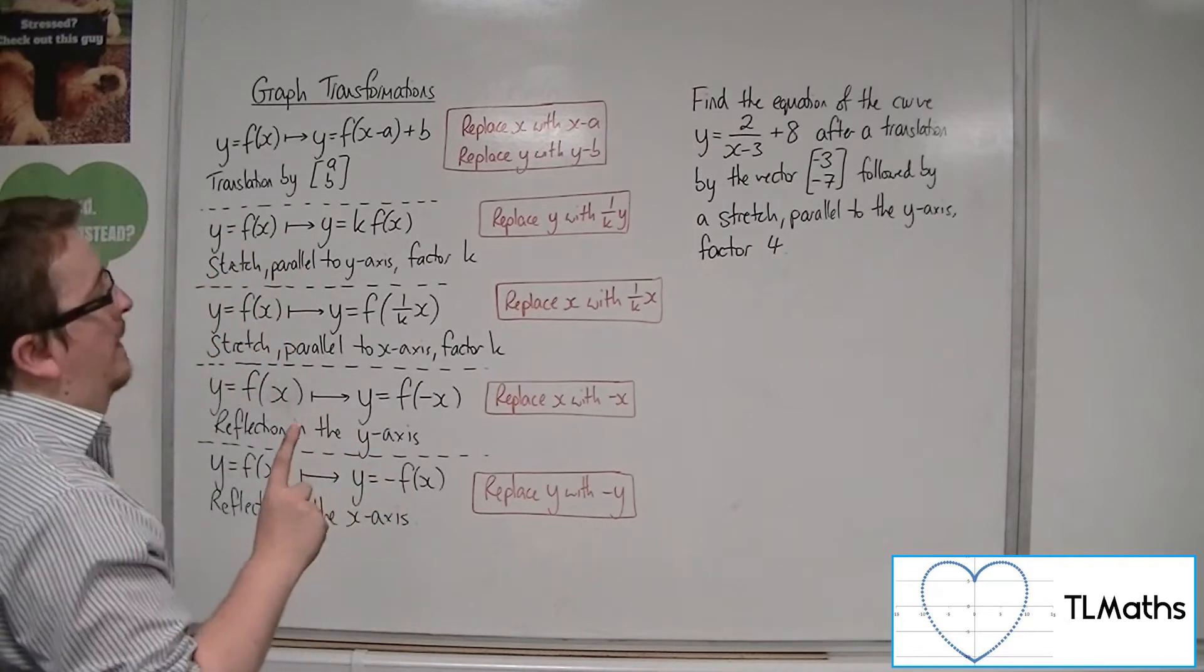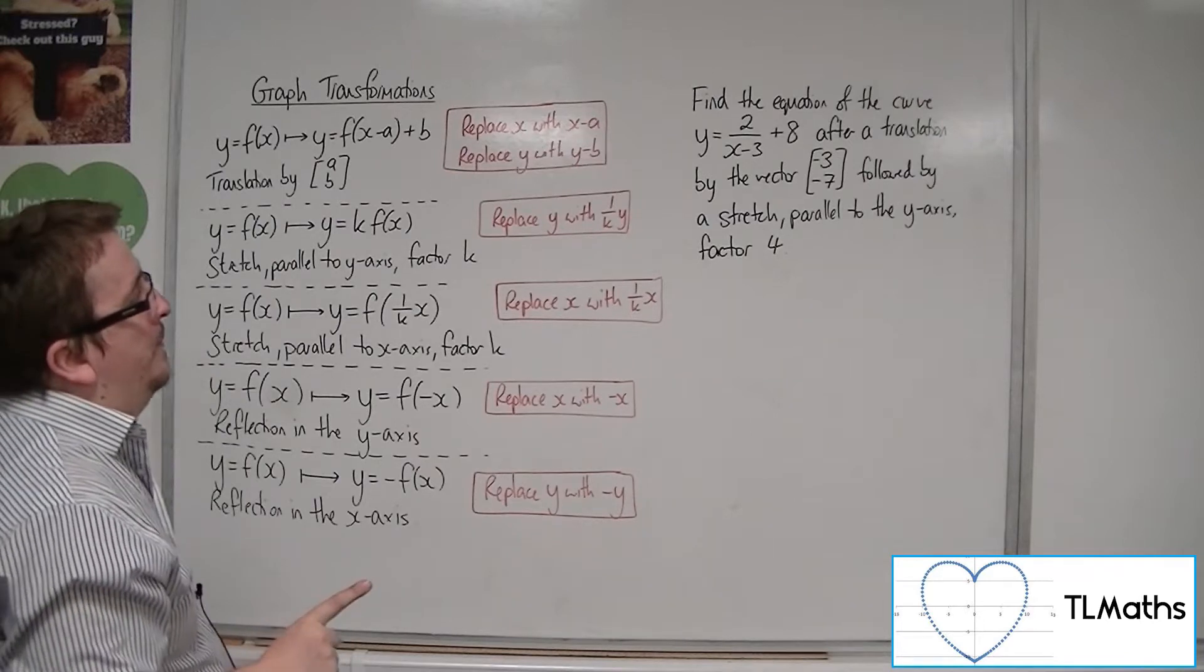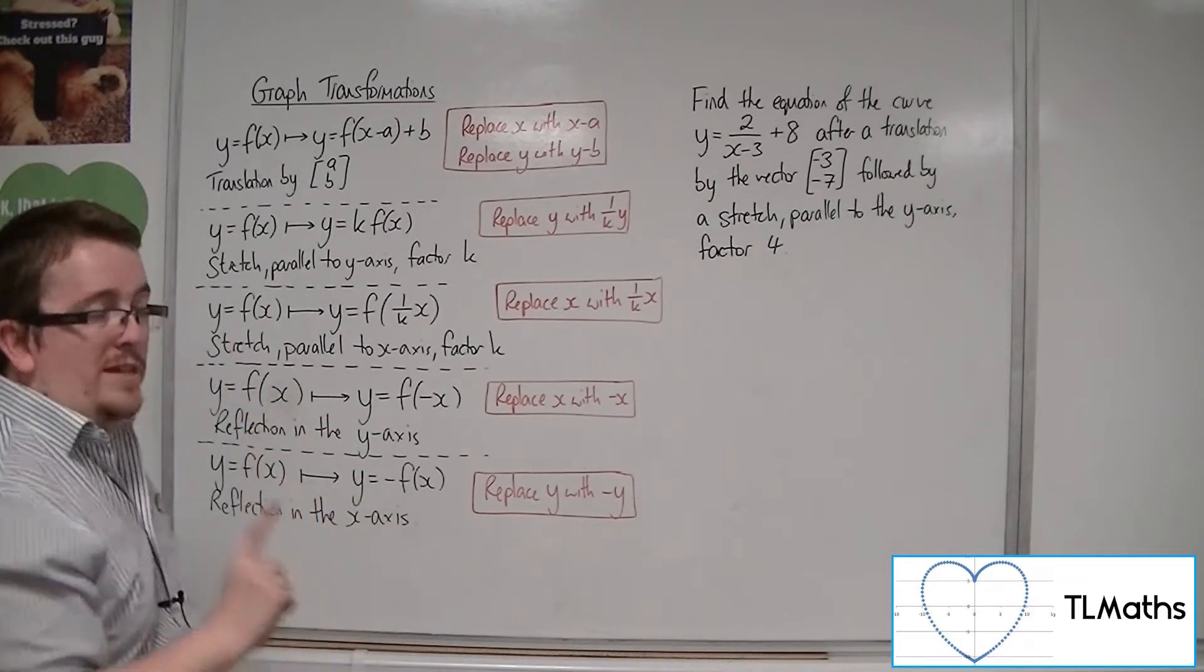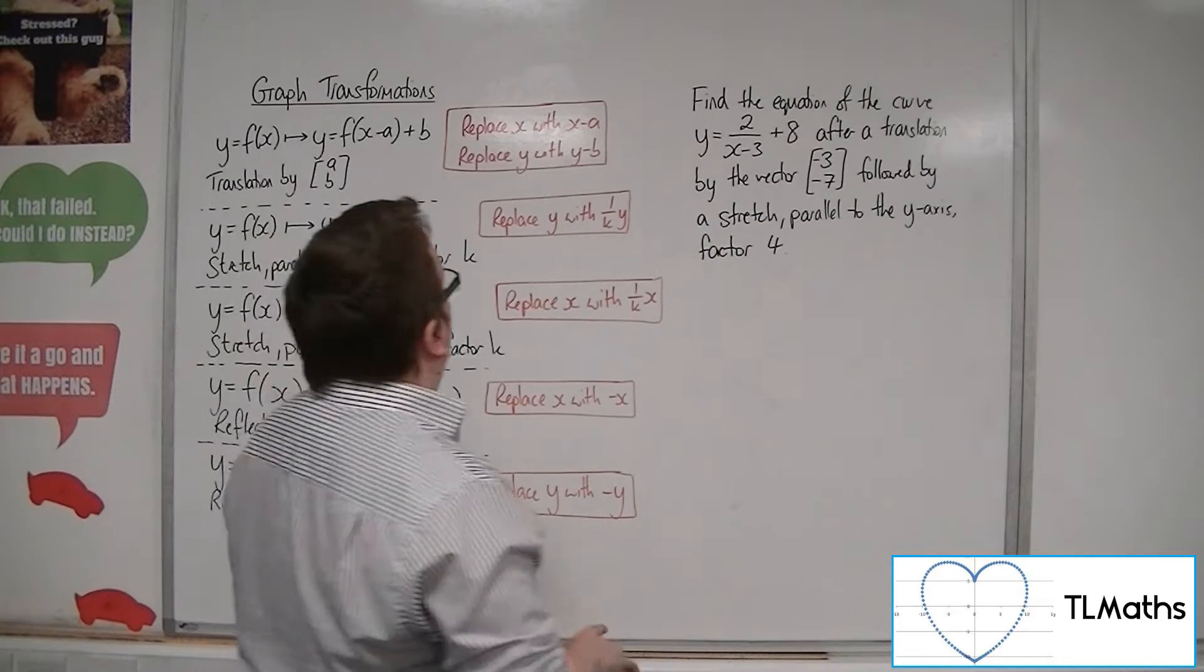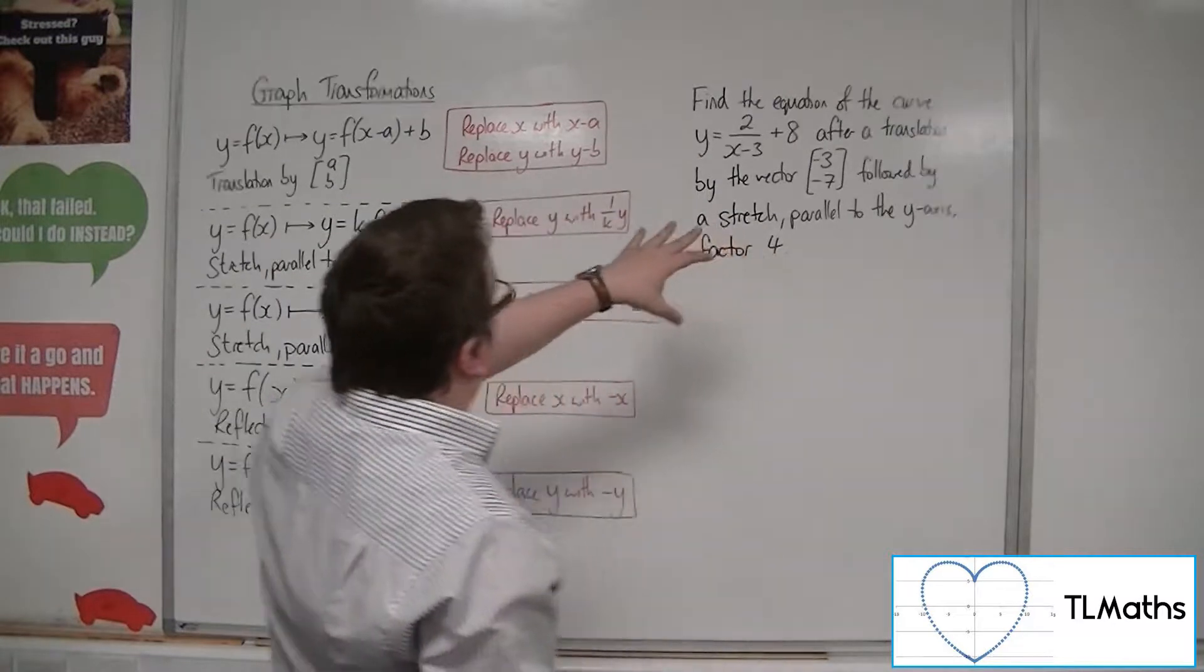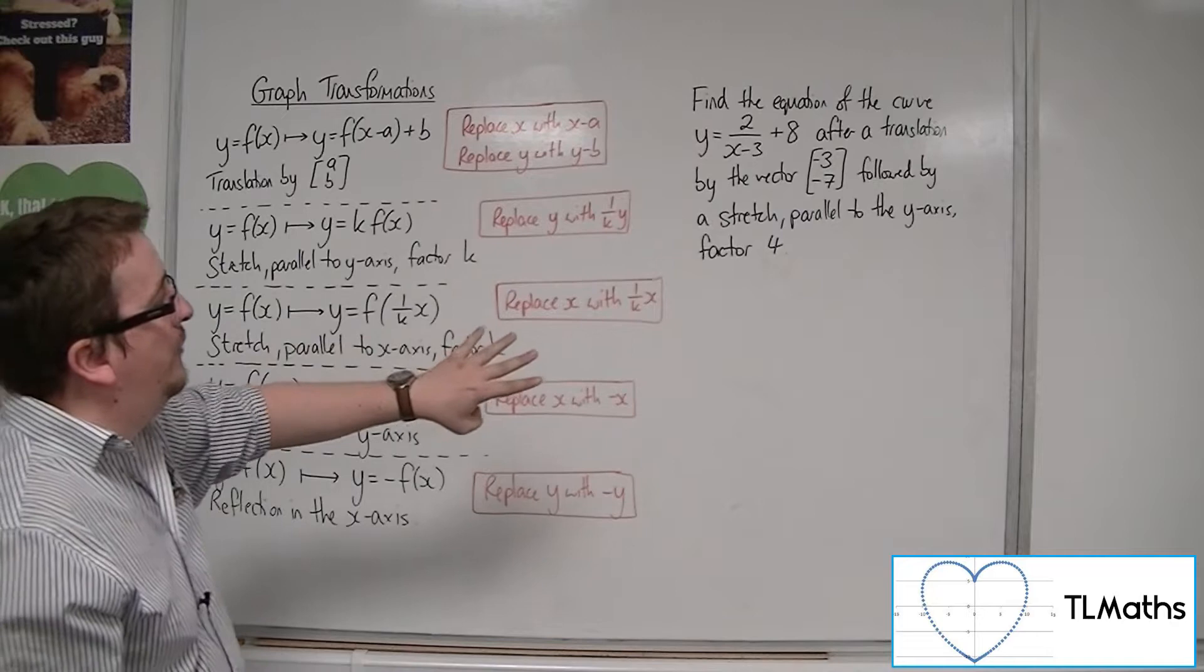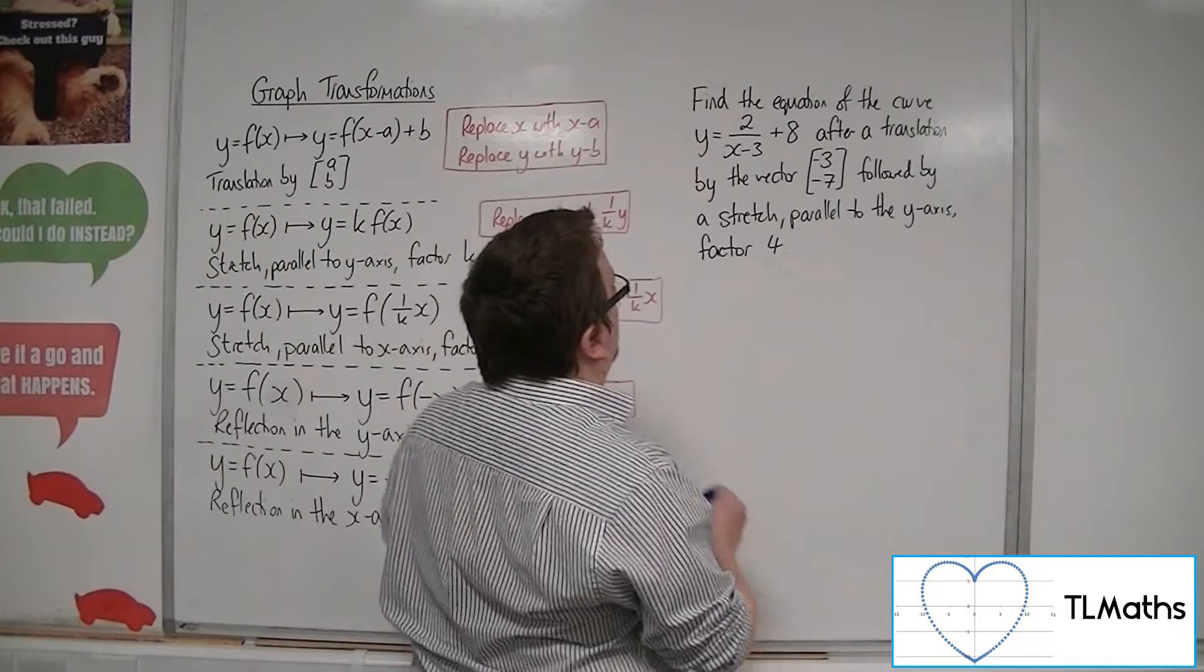Okay, so first things first is to apply the translation. The translation is minus 3 minus 7, so we're going to replace the x with x plus 3 and the y with y plus 7.